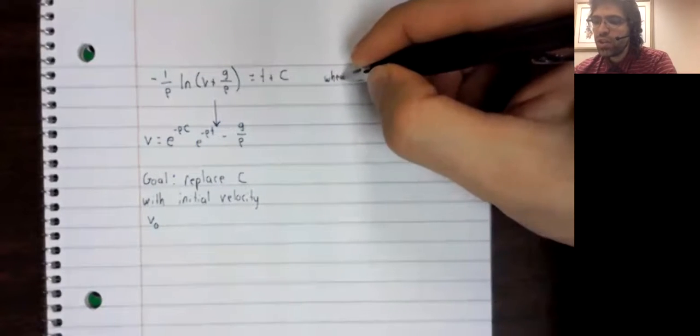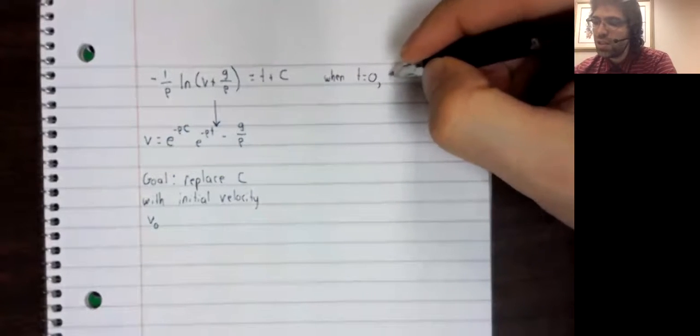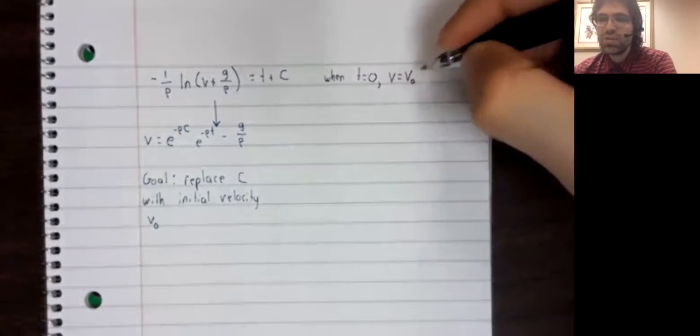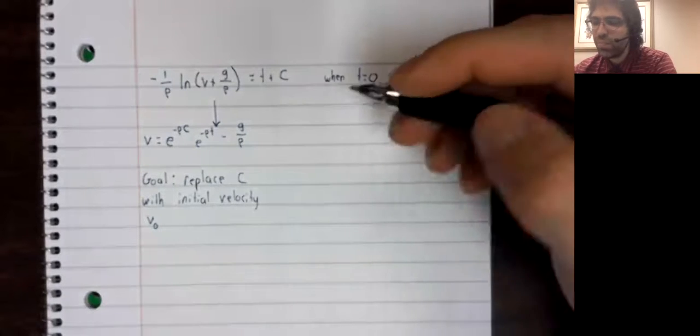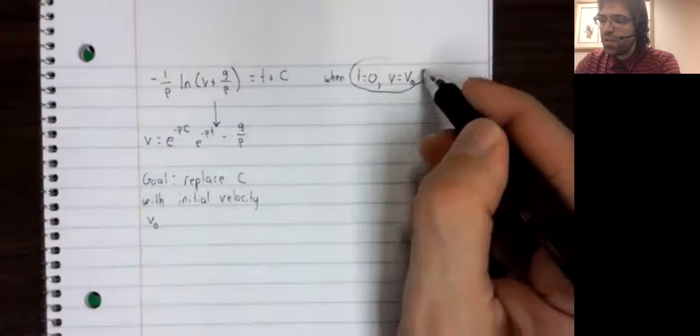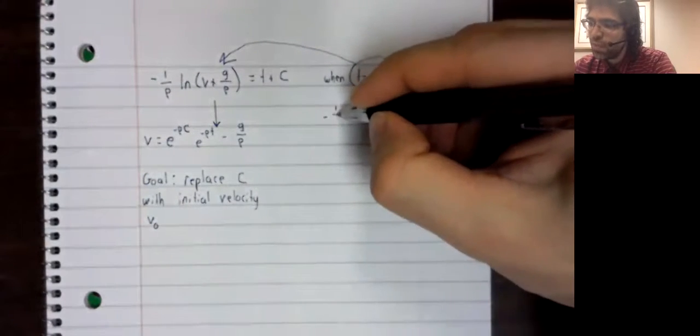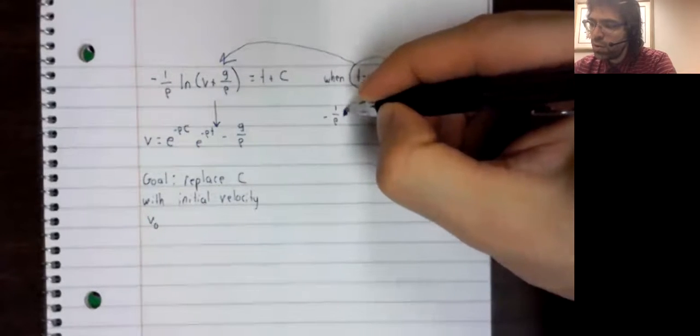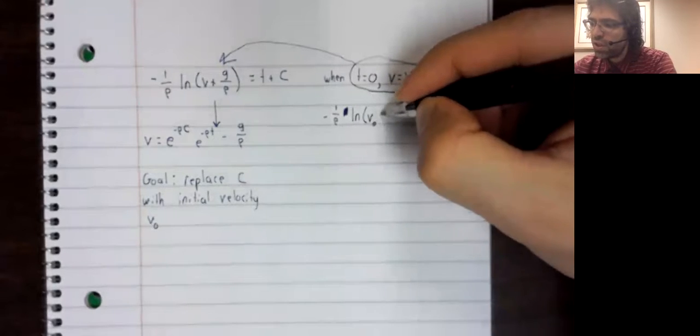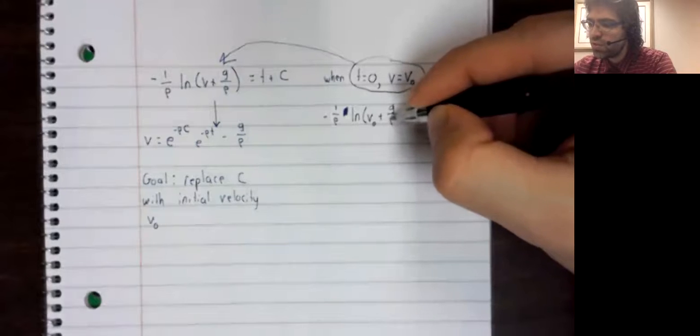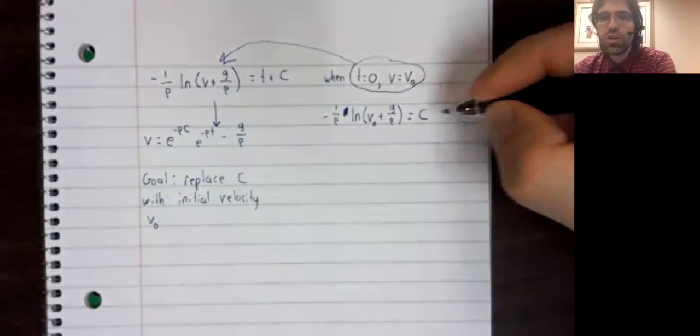By the definition of initial velocity, when time equals zero, the velocity is the initial velocity. And taking these values and plugging them in, negative one over rho times the natural log of the initial velocity plus this constant equals C.